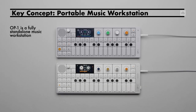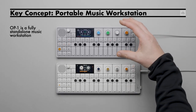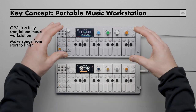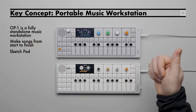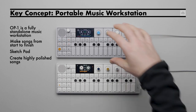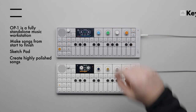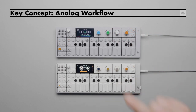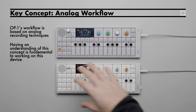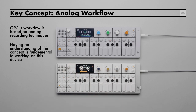OP-1 is a fully standalone music workstation — you can make a song from start to finish using just this device. It can be a sketchpad for musical ideas, but it is also powerful enough to create highly polished songs. One of the most important concepts to know about OP-1 is that it is based on an analog approach to recording audio. This is fundamental to the workflow of the device.